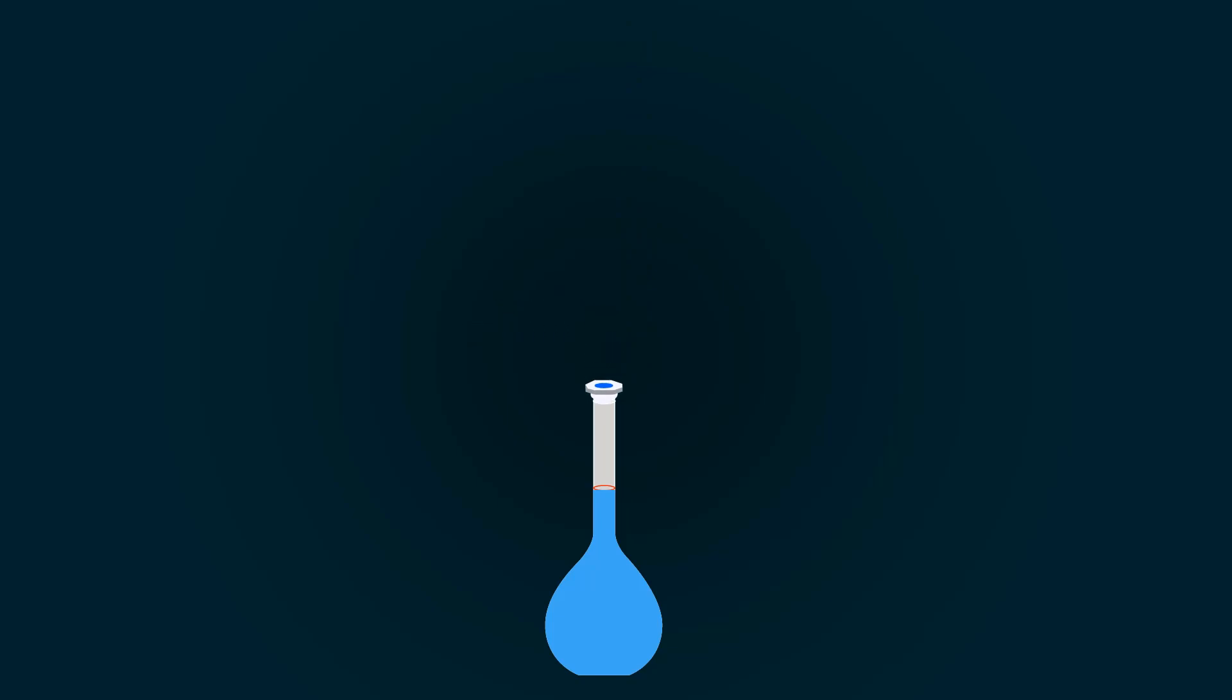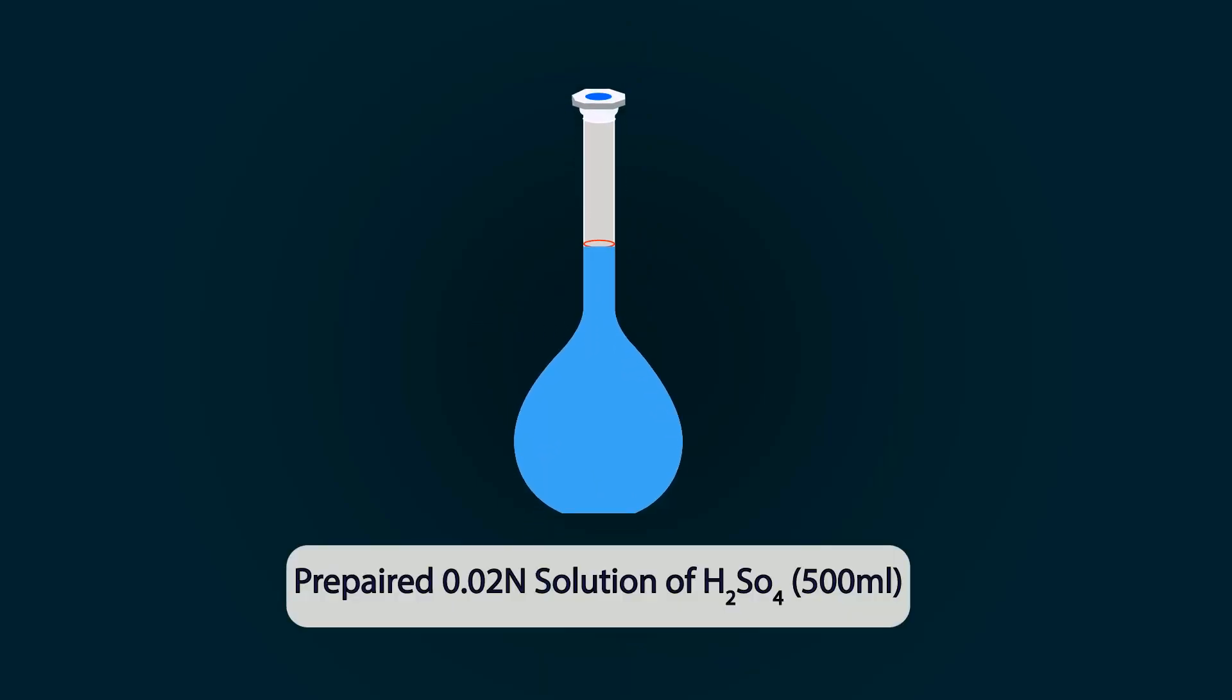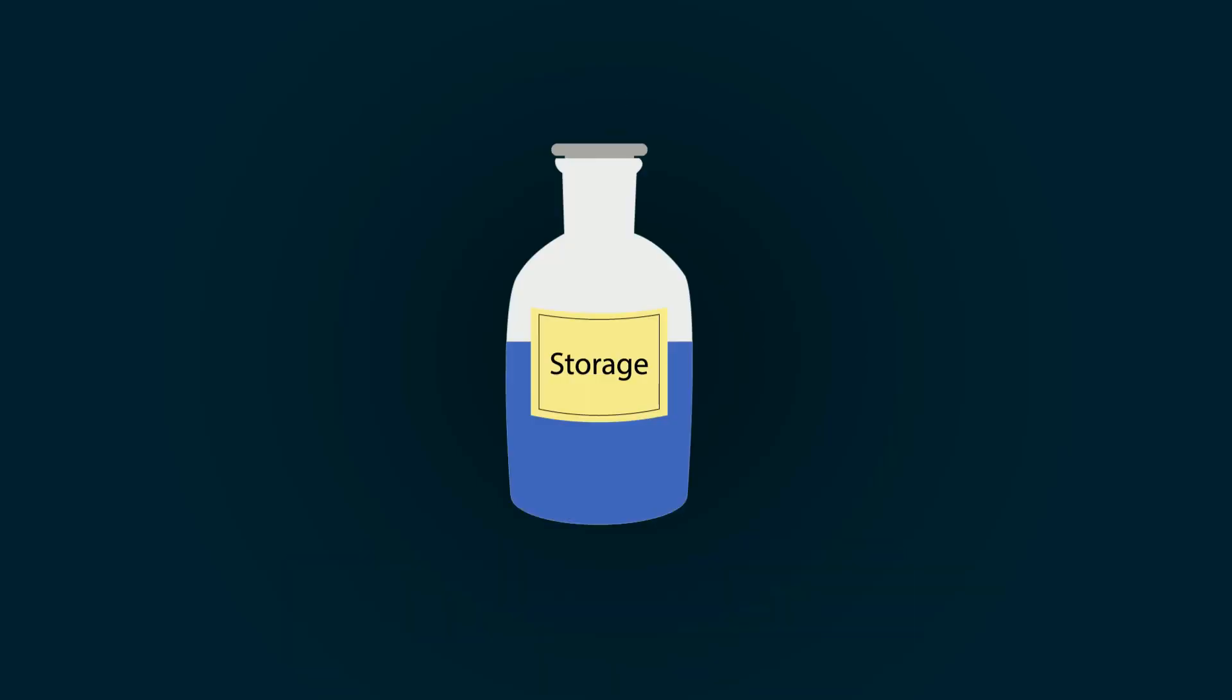Close the measuring flask and you will get 0.02 normal solution of 97% H2SO4. Now you can store it in any bottle you want. Please like and subscribe our channel for other interesting videos. Thank you.